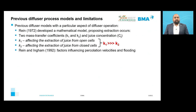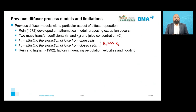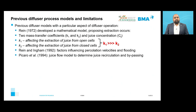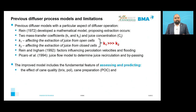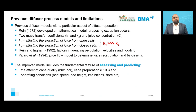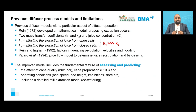Ryan and Ingham in 1992 developed another model which addressed factors influencing percolation velocities and flooding, proposing an operational strategy to maximize extraction while reducing flooding. Picaro et al. in 1994 developed a juice flow model to determine the quantity of juice recirculation and juice bypassing within a single stage. This improved model includes the fundamental feature of assessing and predicting the effect of cane quality — described in terms of brix and POC — and the operating conditions of the diffuser on extraction performance. It also includes a detailed mill extraction model to determine the performance of the dewatering mill, so that extraction performance of the complete diffuser station can be modeled.